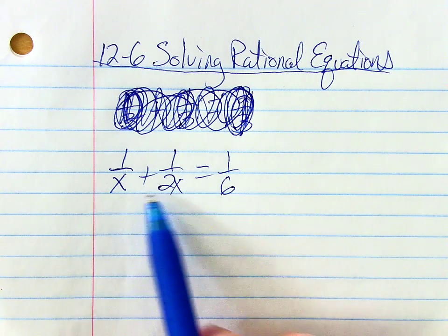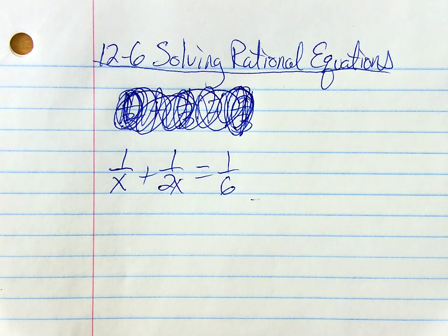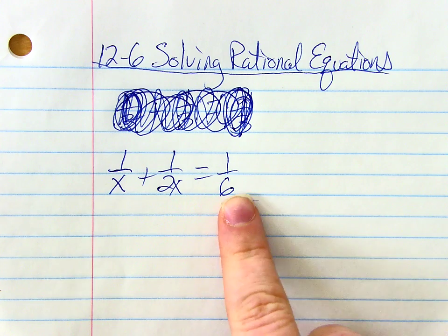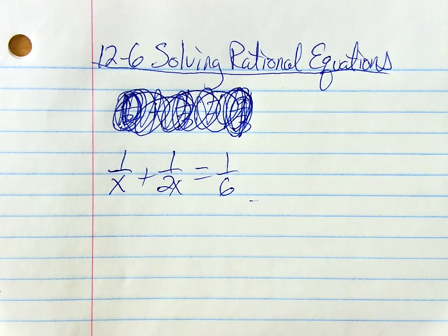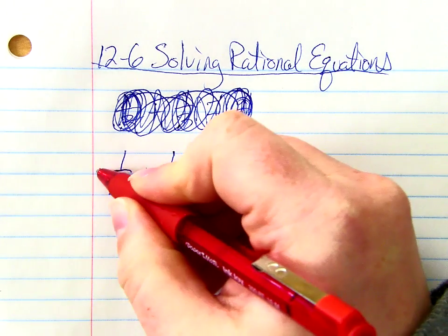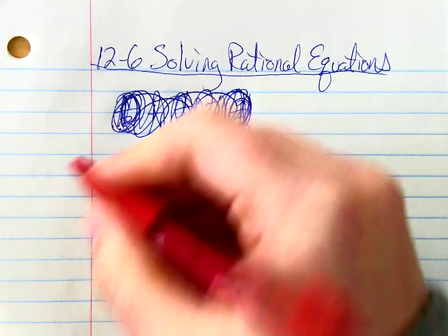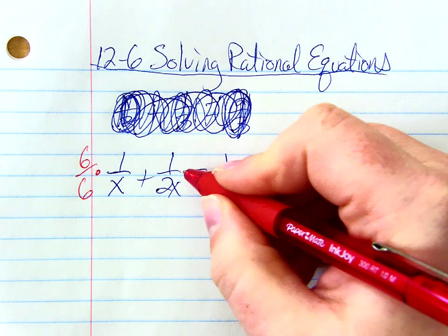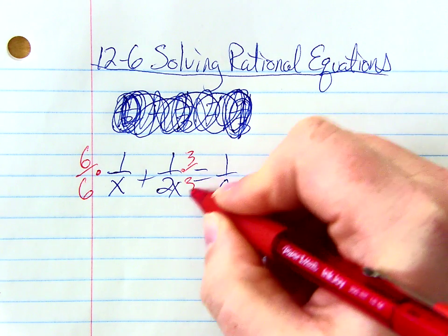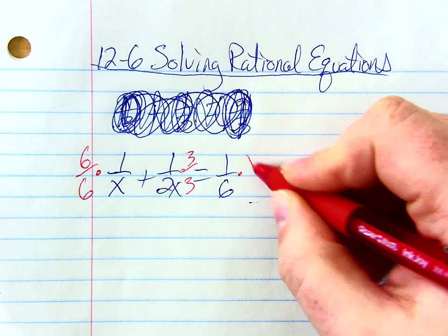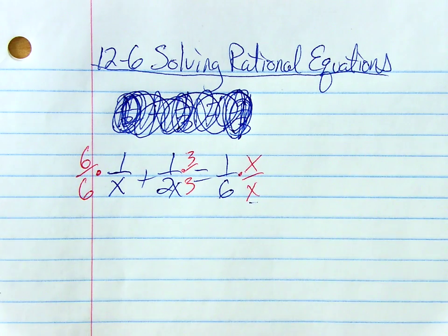So if I look at these, what's my common denominator going to be? 6x, right? If I want everybody to have the same denominator, it's going to be 6x. So what will I need to multiply this first fraction by? 6 over 6. This middle one, 3 over 3, and then the last one? x over x, right?